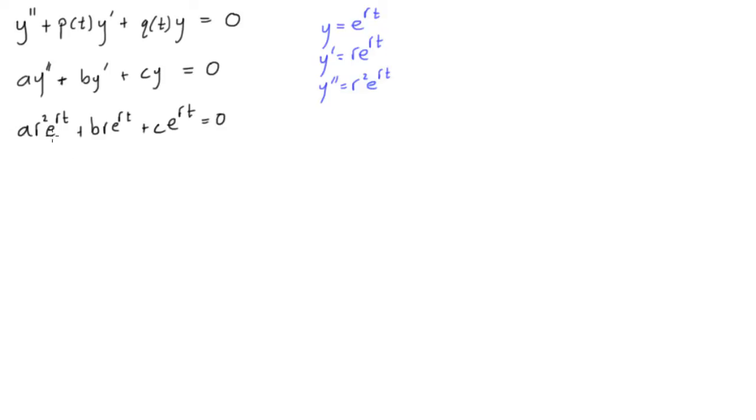So now what we do is factor this e^(rt) out, it's in every term, so we have e^(rt) times (ar² + br + c), this is all equal to zero. Now the next thing that we want to do is just divide both sides by e^(rt) to get rid of it, and we'll have ar² + br + c = 0.